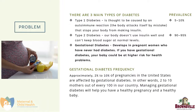There are three main types of diabetes. Type 1 diabetes is thought to be caused by an autoimmune reaction, meaning the body attacks itself by mistake, stopping your body from making insulin. 5–10% of all diabetes cases are from type 1. Type 2 diabetes occurs when your body doesn't use insulin well and can't keep blood sugar at normal levels — 90–95% of all diabetes cases. And gestational diabetes develops in pregnant women who have never had diabetes before. If you have gestational diabetes, your baby could be at high risk for health problems.